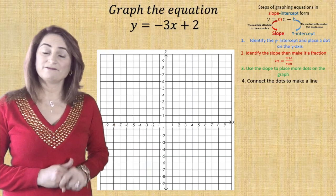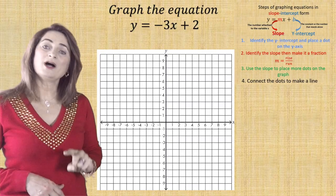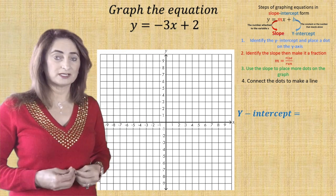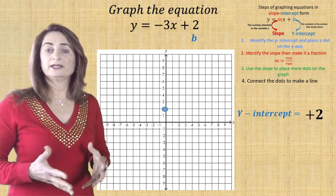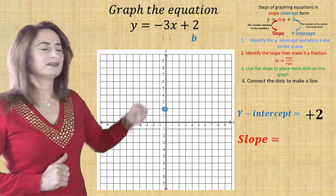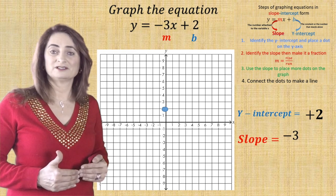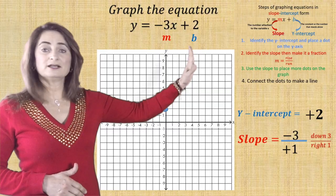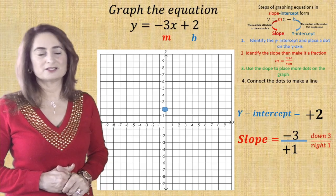Let's practice graphing. Y is isolated so it's in slope-intercept form. Step one: the y-intercept is the number that stands alone — positive two. Find positive two on the y-axis and put a dot. Step two: the slope is the number attached to x, which is negative three. Write it as a fraction: negative three over one, meaning go down three and right one to draw other dots.